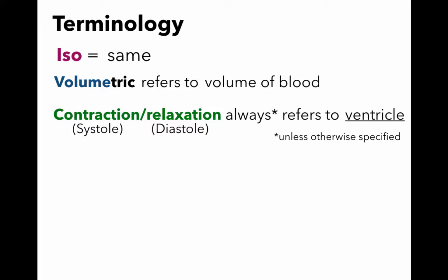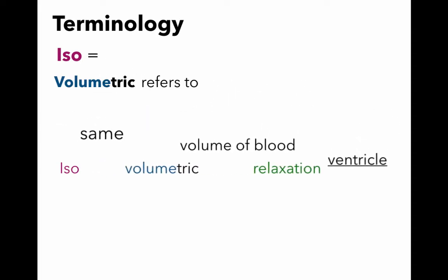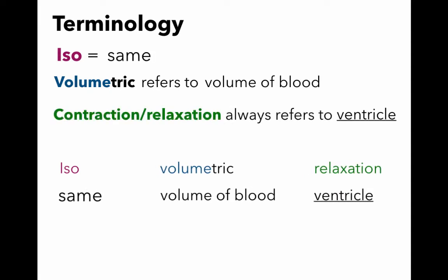So let's put it all together. One of the phases we're going to start with is called iso-volumetric relaxation. When we say iso-volumetric relaxation, we're referring to the same volume of blood contained in the ventricle as it relaxes. So the ventricle is relaxing and the volume of blood is not changing within it.